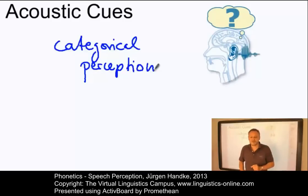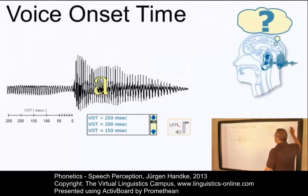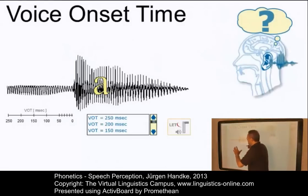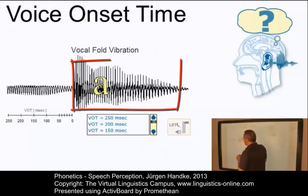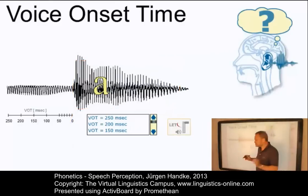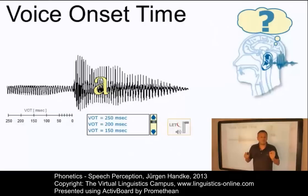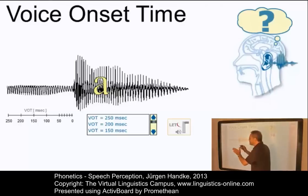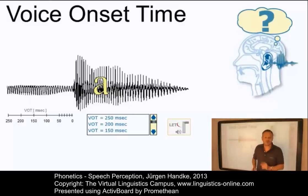Let us exemplify such categories. The first one is called Voice Onset Time. Voice Onset Time, or in short VOT, is the point when vocal fold vibration starts relative to the release of closure. It is crucial for us to discriminate between clusters such as 'bar' and 'par'. It is a well-established fact that a gradual delay of voice onset time does not lead to a differentiation between the voiceless and voiced consonants.